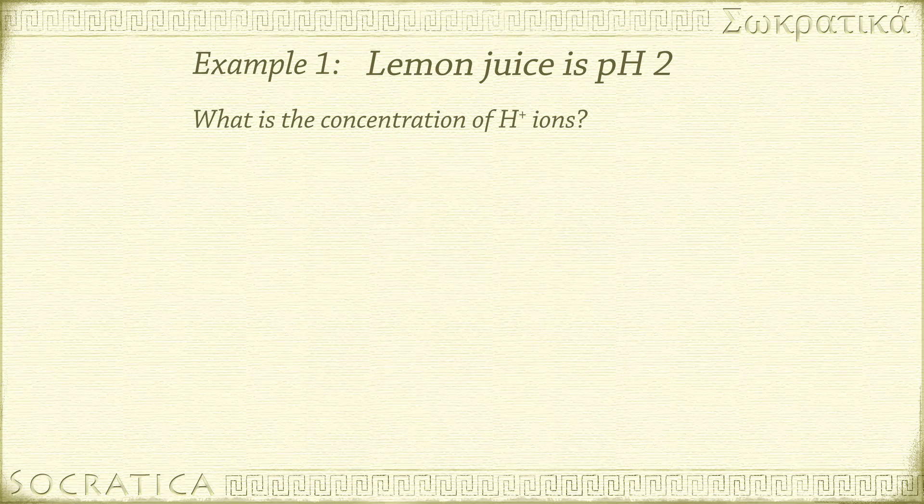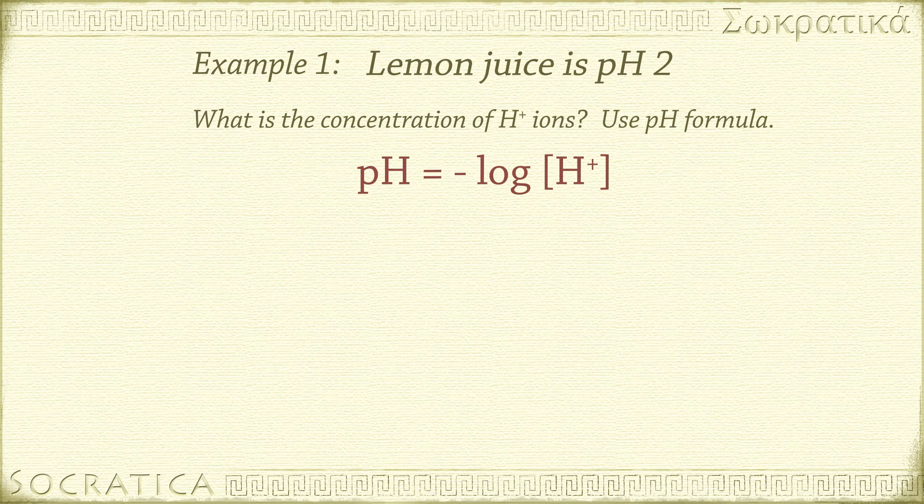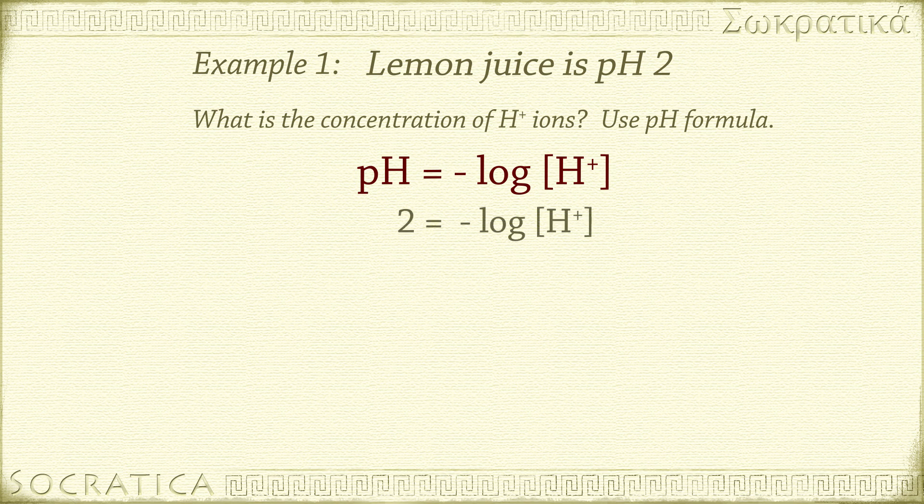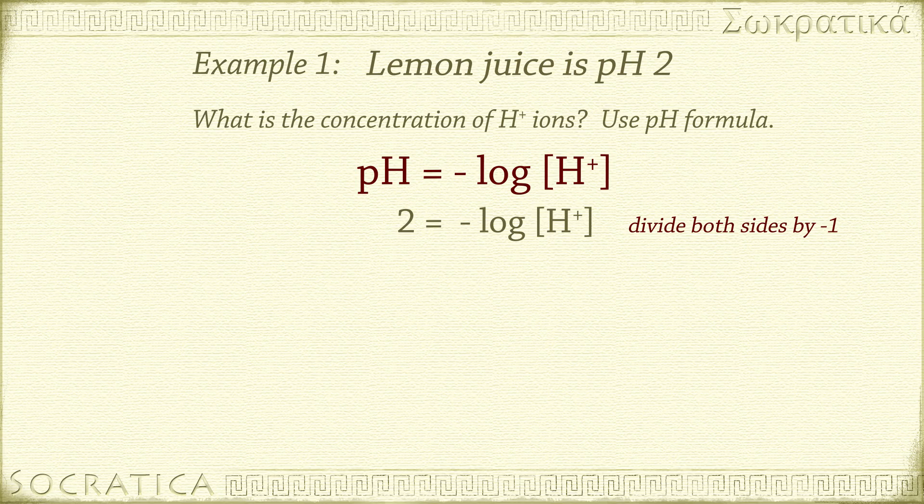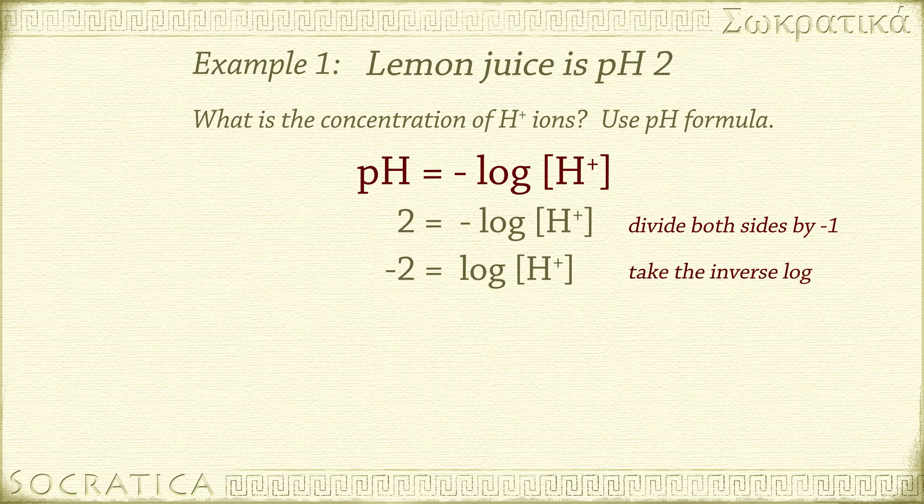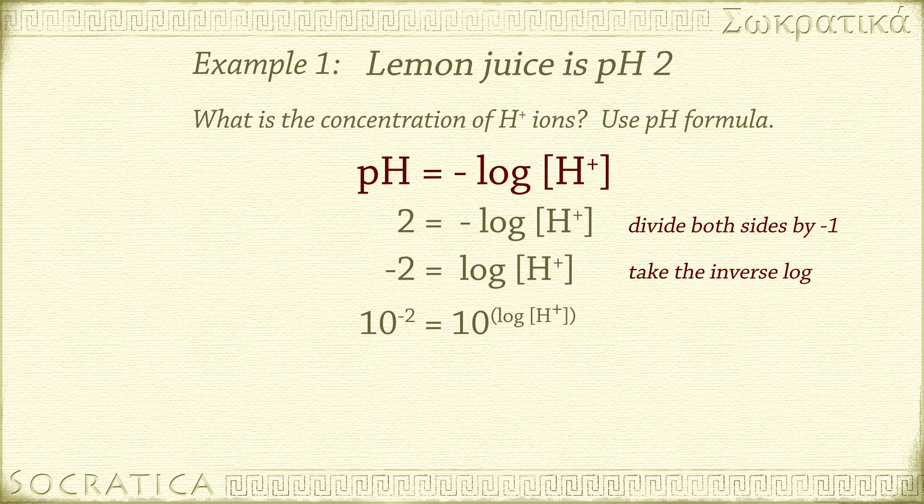We can figure this out using the equation for pH. pH equals negative log of the concentration of H+ ions. Substitute in 2 for pH. Divide both sides by negative 1 so the log is on its own. Negative 2 equals log of the concentration of H+ ions. We can get rid of the log on the right by taking the anti-log, or inverse log, of both sides. This means we have 10 to the negative 2 on the left and 10 to the log of the concentration of H+ ions on the right.